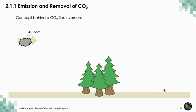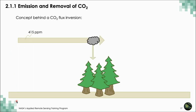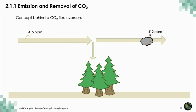The concept behind a CO2 flux inversion: imagine a parcel of air where you measure a concentration of 415 parts per million. You watch this air mass move with the wind over a forest, make another measurement, and find it's decreased to 412 parts per million. The question is: how much carbon was taken up by that forest? From these two measurements, we can estimate this because the concentration changed by 3 ppm, so that air mass must have lost 3 ppm's worth of carbon dioxide.